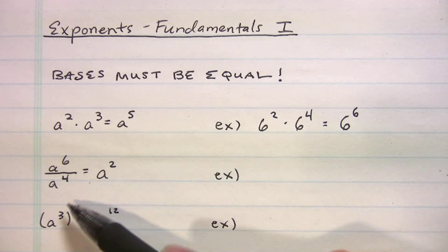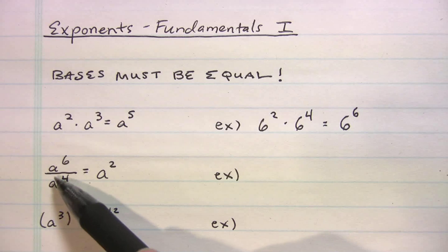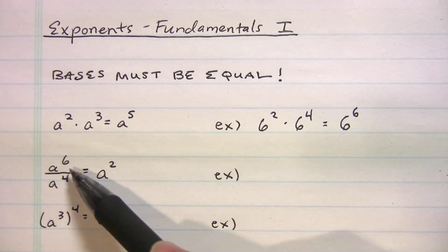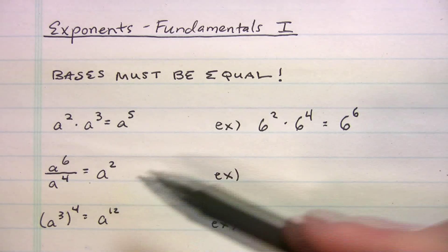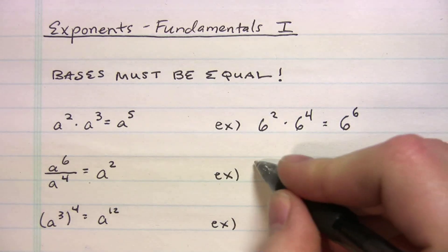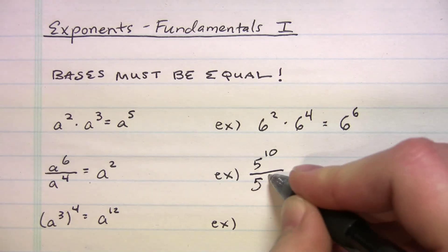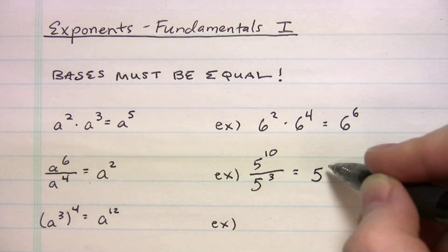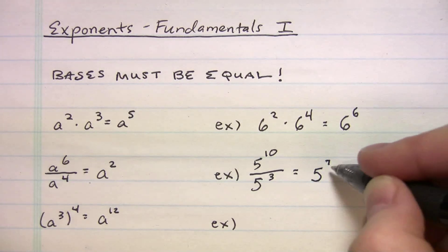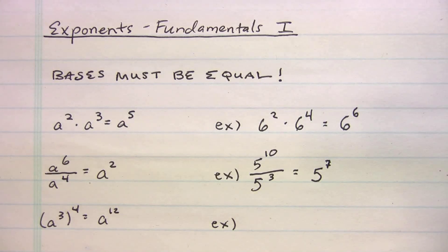So what do you do when you're dividing? We have a to the sixth divided by a to the fourth. All you're going to do, since the bases are the same, we're going to subtract the exponents. So six minus four, we get a squared. Let me give you an example of that one. What if we had five to the tenth divided by five to the third? Bases are the same. Let's keep it. Five to the seventh. That's just ten minus three. So those are pretty basic. I'm sure a lot of you guys know those. Just good to go over.